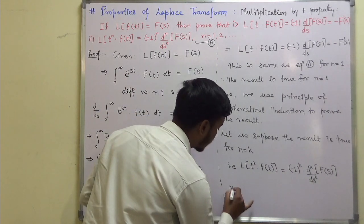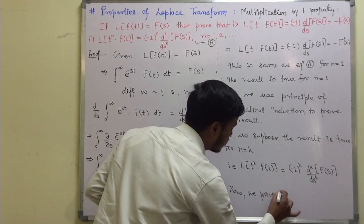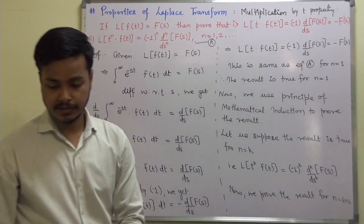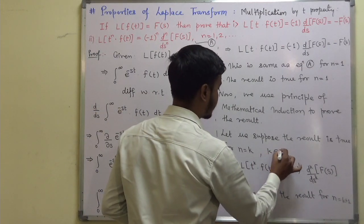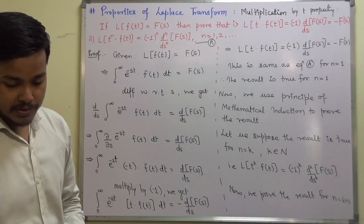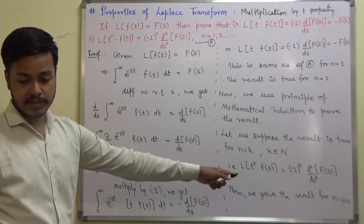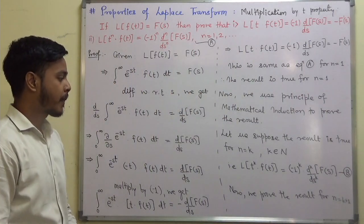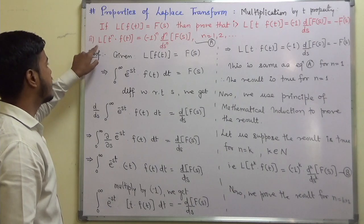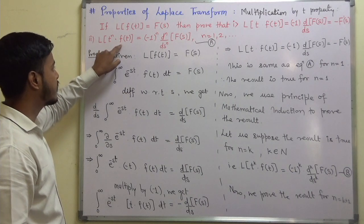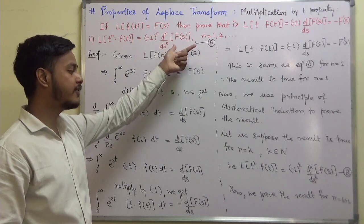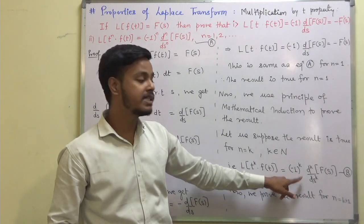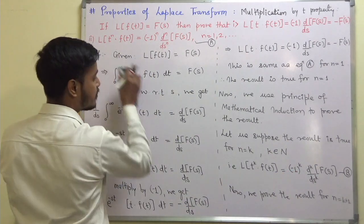Now we prove the result for n=k+1, where k is any natural number. That is, we want to show that the Laplace transform of t^(k+1) · f(t) equals (-1)^(k+1) times the (k+1)th order derivative of F(s). Currently we have the kth derivative; we need the (k+1)th, so we differentiate equation B one more time.